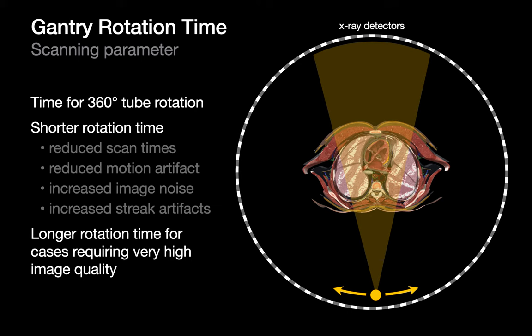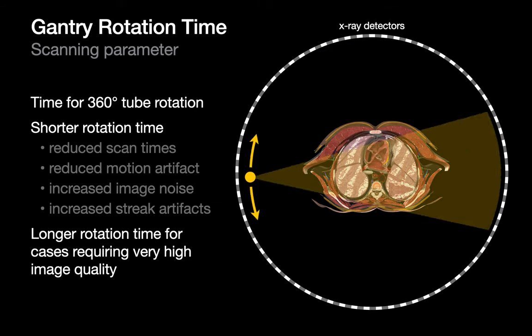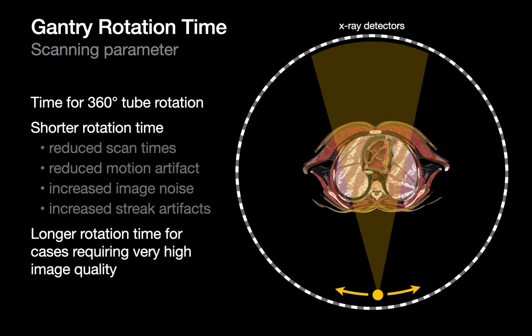Gantry rotation time is the amount of time it takes for the x-ray tube to revolve once around the patient. Shorter gantry rotation time means the tube completes one revolution faster, reducing scan times and motion artifact, but at the cost of more image noise and streak artifacts. As long as the body part is relatively fixed, slower tube rotation — longer gantry rotation time — results in better image quality, important for fine structures like the inner ear and temporal bone.